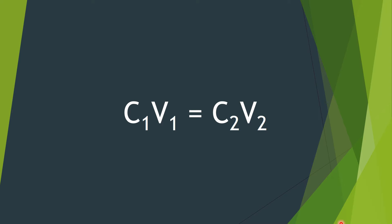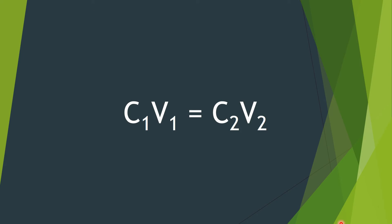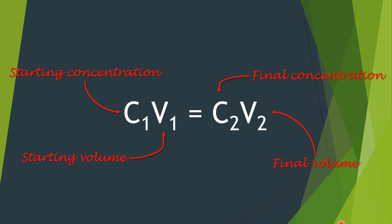In this video, I'm going to explain what the C1V1 = C2V2 equation means. C1V1 = C2V2 is actually short for C1 multiplied by V1 equals C2 multiplied by V2. Essentially, what it means is the starting concentration multiplied by the starting volume is always the same as the final concentration multiplied by the final volume.